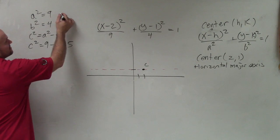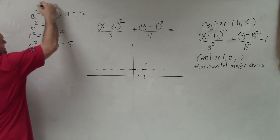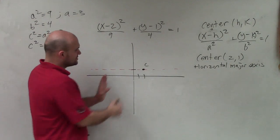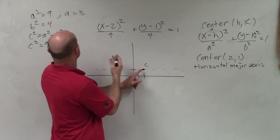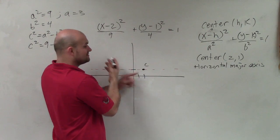So my vertices and my foci are all going to lie in this dotted red line where my co-vertices is going to be perpendicular to that line. Let's figure out what a is. If a² is 9, we can say a = 3 as I take the square root of both sides.